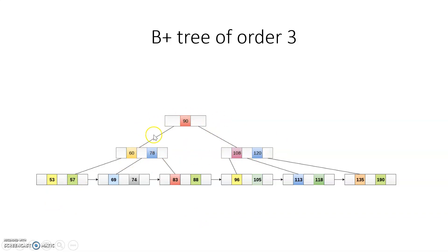In this structure, the index nodes are stored in main memory and the leaf nodes are stored in secondary memory. One important thing to notice is that the leaf nodes are connected to each other through a linked list, so search operations become efficient. Once you reach one leaf node, you can traverse through the linked list to find data in another node.